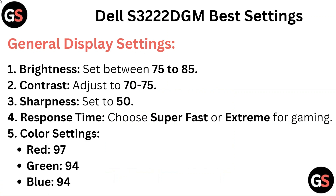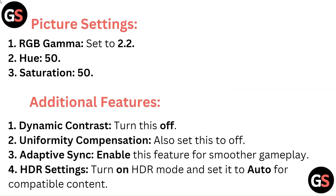Color Settings: Red 97, Green 94, Blue 94. Picture Settings: RGB Gamma set to 2.2, View 50/50, Saturation 50/50. Additional Features: Dynamic Contrast turn this off, Uniformity Compensation also set this to off, Adaptive Sync enable this feature for smoother gameplay. HDR Settings: Turn on HDR mode and set it to auto for compatible content.